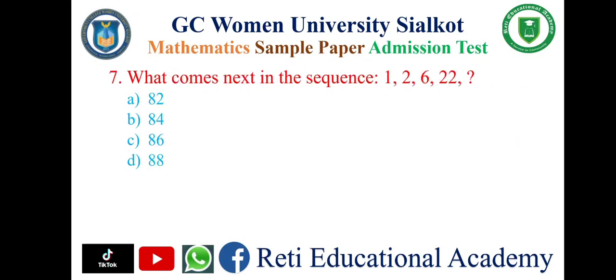Question number seven: What comes next in the sequence 1, 2, 6, 22 — ? A: 82, B: 84, C: 86, D: 88. In the first two numbers the difference is 1, in the second and third numbers the difference is 4, and in the third and fourth numbers the difference is 16. One squared is 1, 2 squared is 4, and 4 squared is 16. So 4 doubled is 8, and 8 squared is 64. Then we add 64 to 22, which gives 86. So option C is correct.